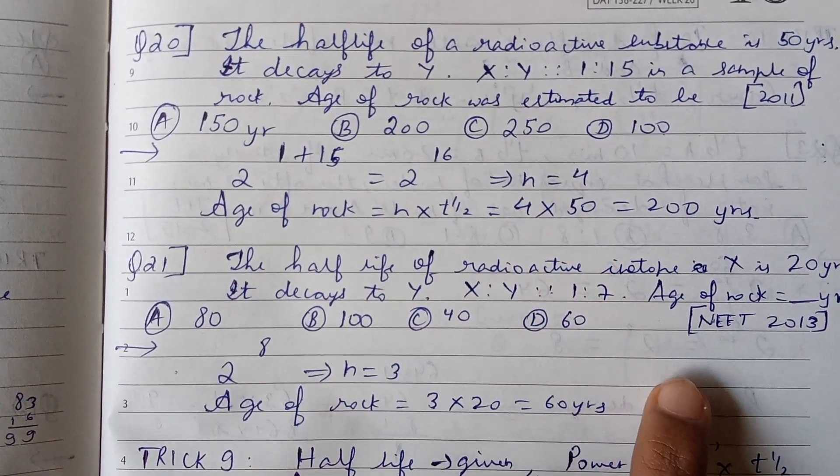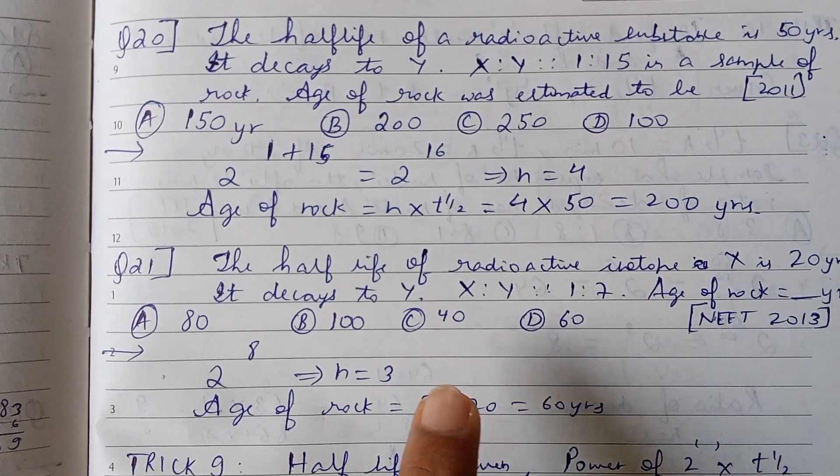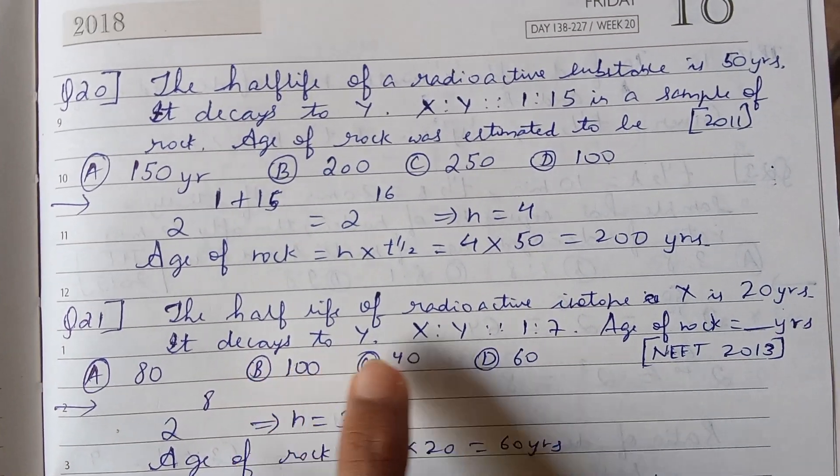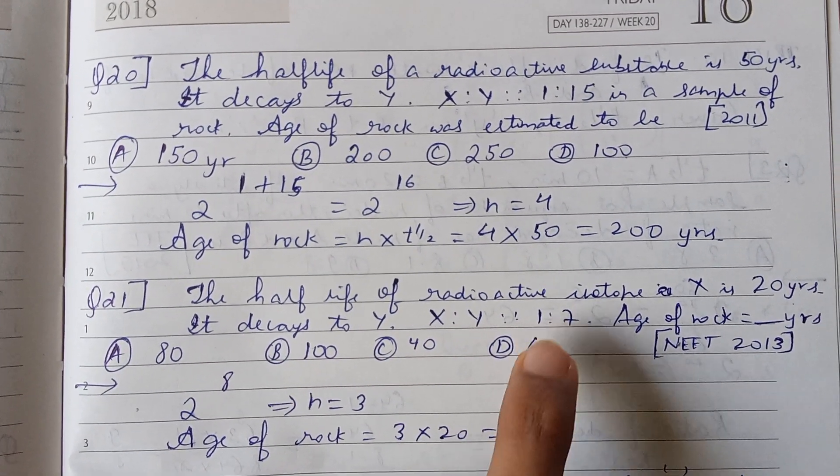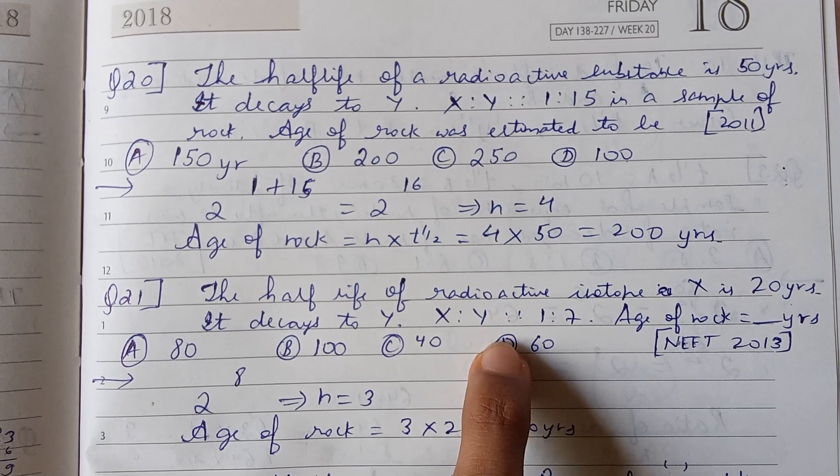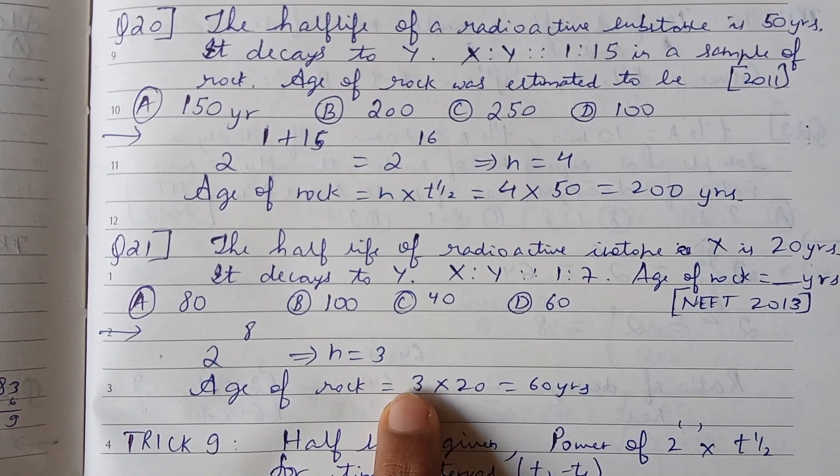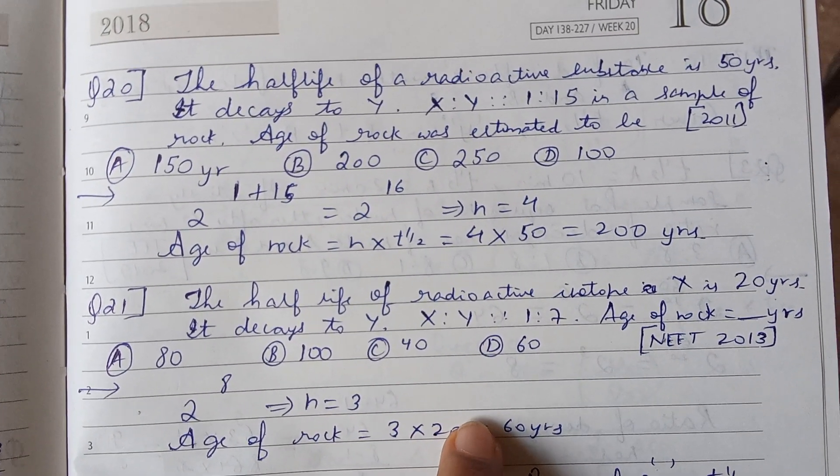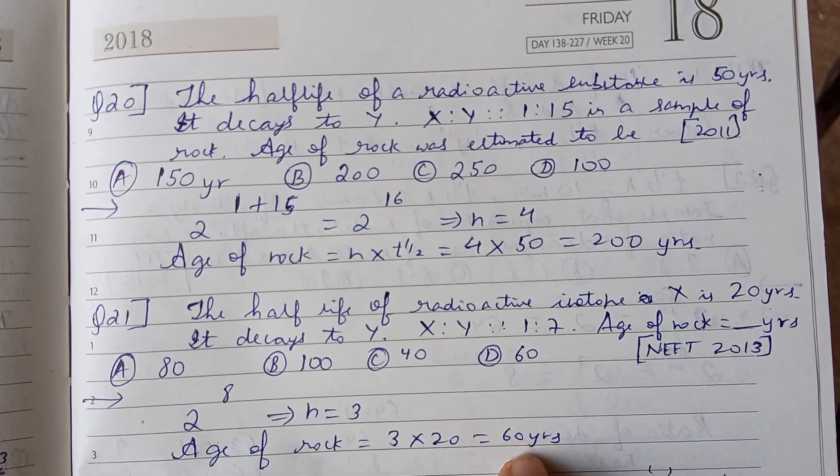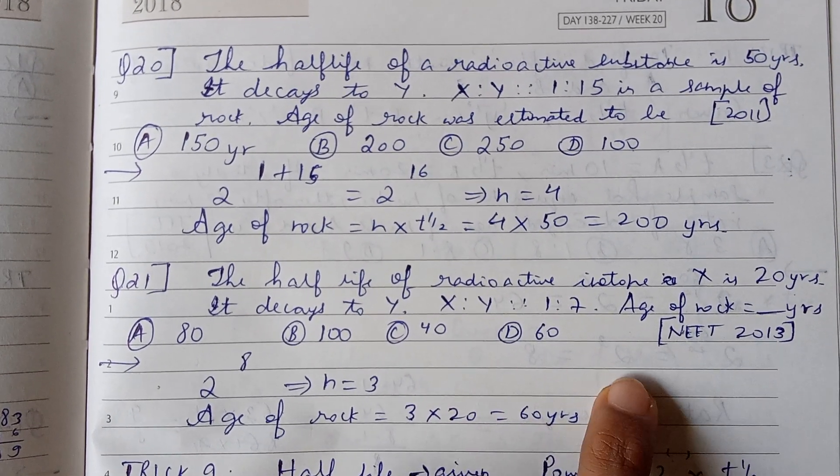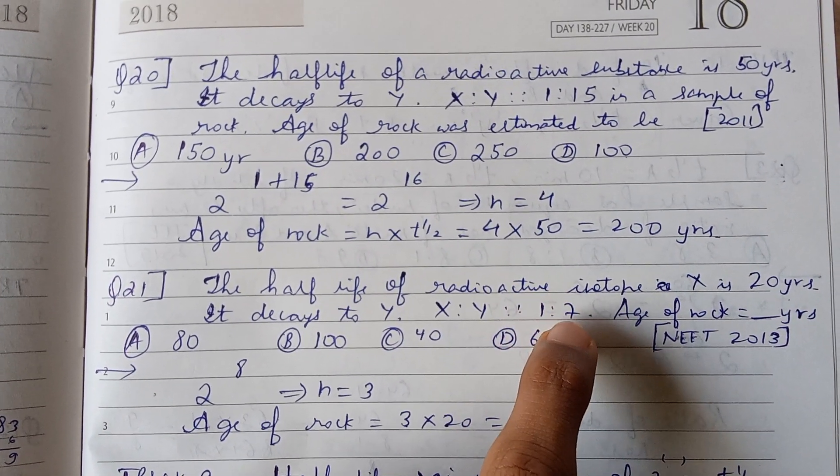Now see the NEET question. x+y is 1+7 equals 8, which is 2^3, so n equals 3. Age of rock is 3 times 20 (the half-life), which is 3 times 20 equals 60 years. So we have solved a NEET question and a JEE question by using this trick.